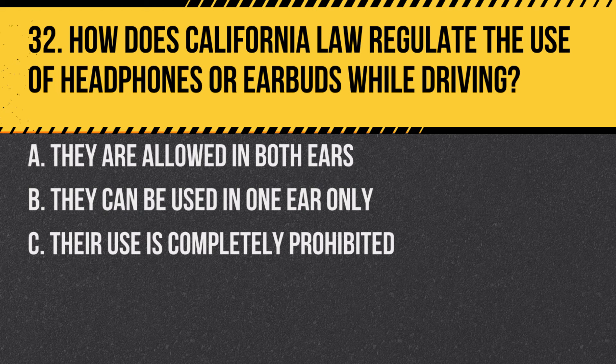Question 32. How does California law regulate the use of headphones or earbuds while driving? A. They are allowed in both ears. B. They can be used in one ear only. C. Their use is completely prohibited. Answer: B. They can be used in one ear only. This allows drivers to remain aware of their surroundings.